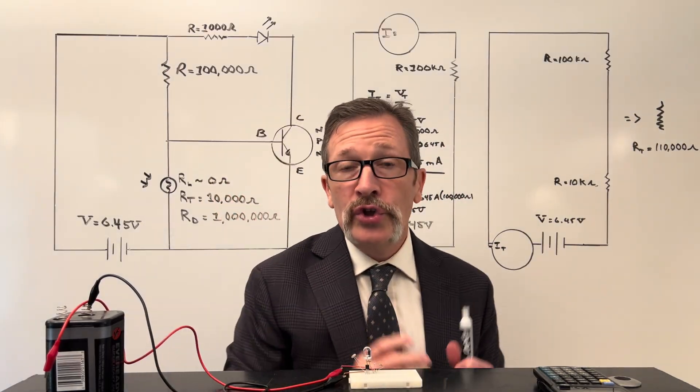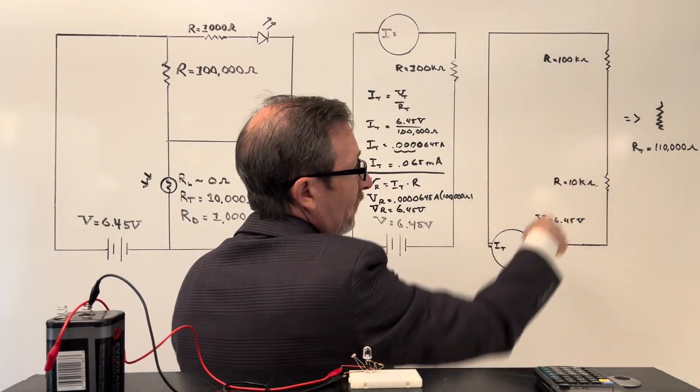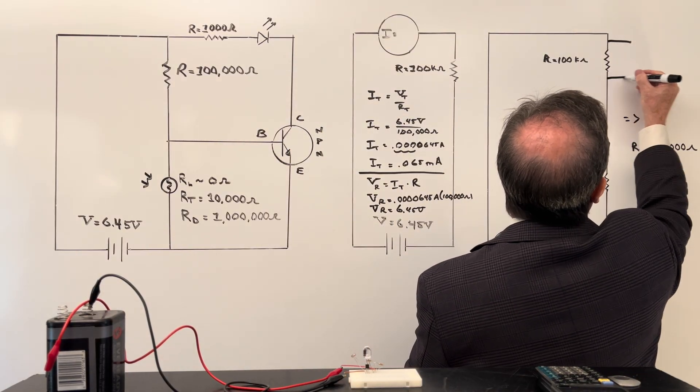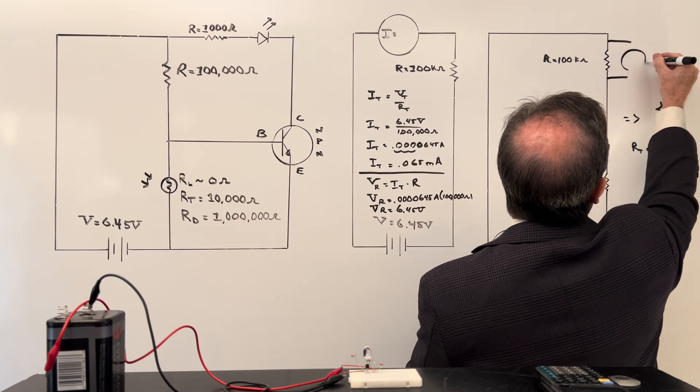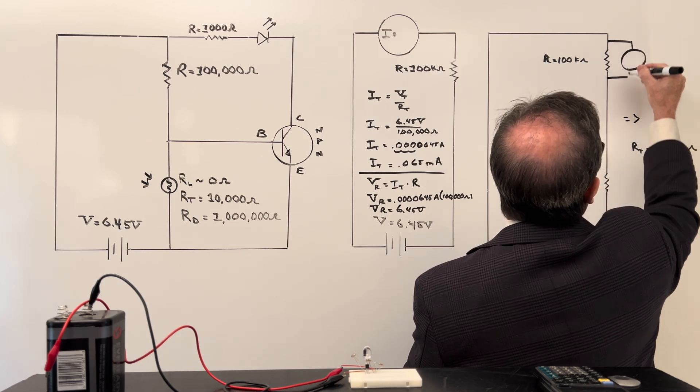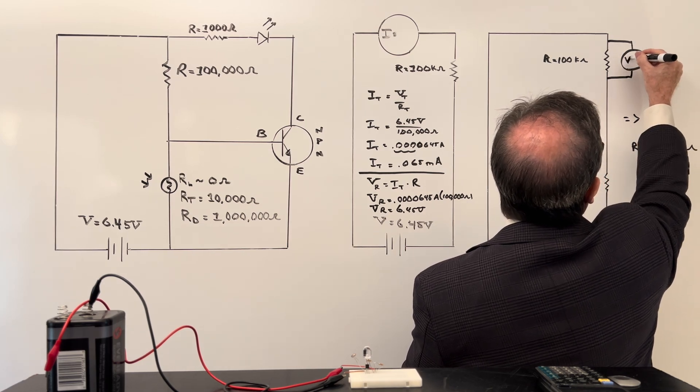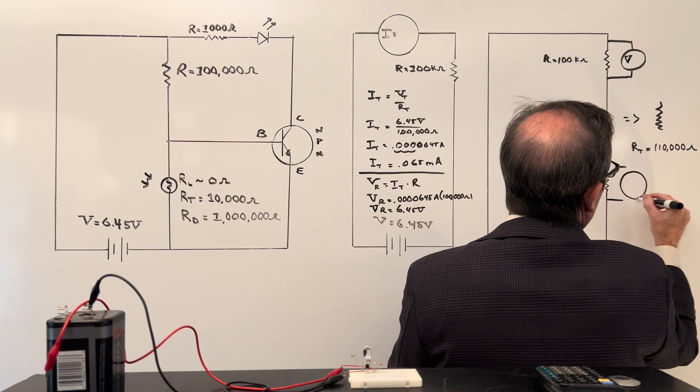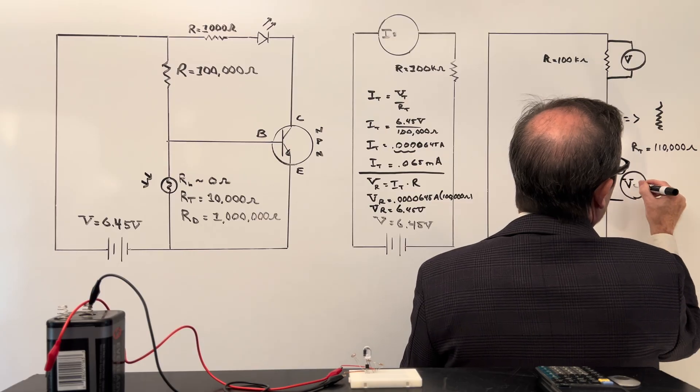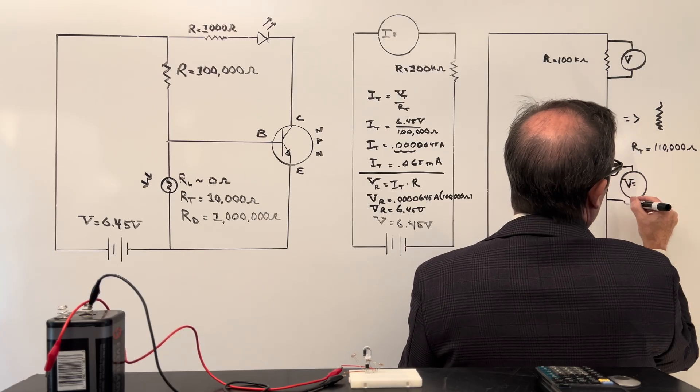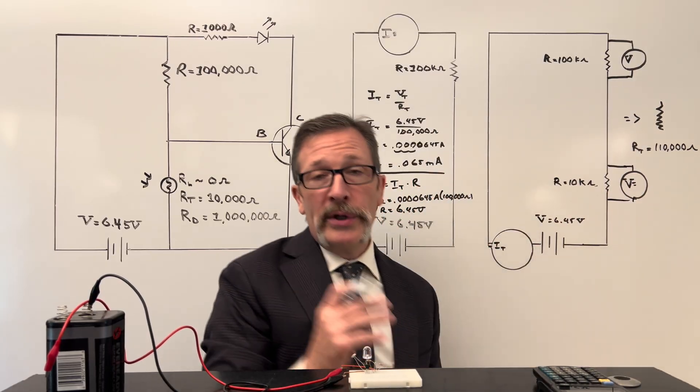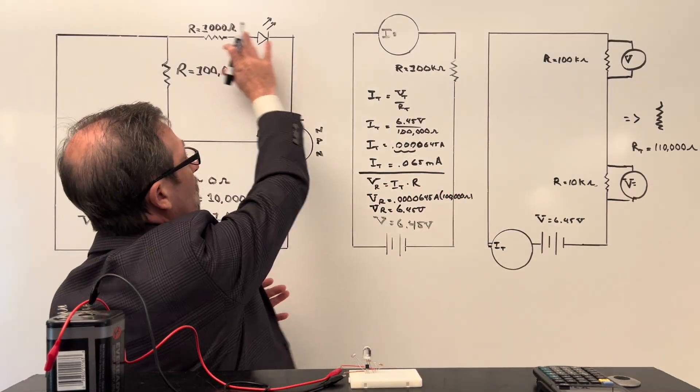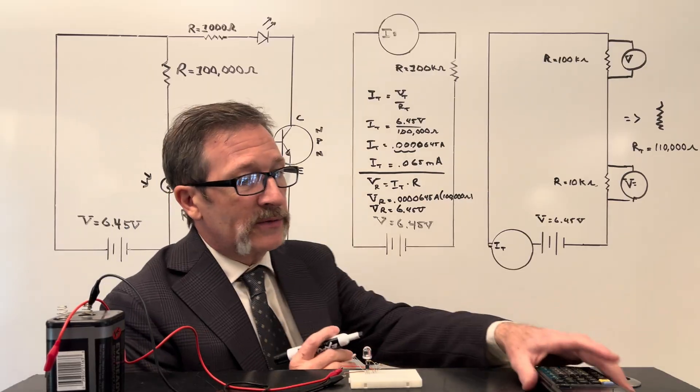From there we can end up getting our total amount of current that's going to end up flowing through here. And then we can put a voltmeter on each side here. I could say what would be the voltage across here, and then I can say what is the voltage across here. And remember we need about 0.645 volts for this circuit to start allowing current to flow on this outside loop.